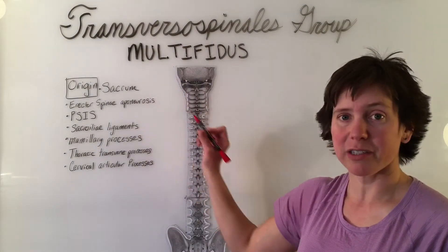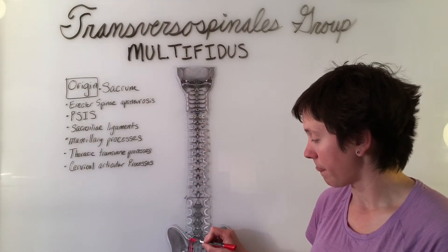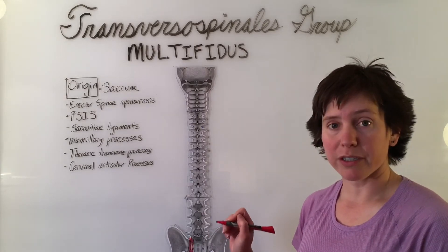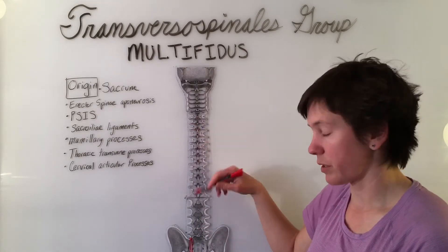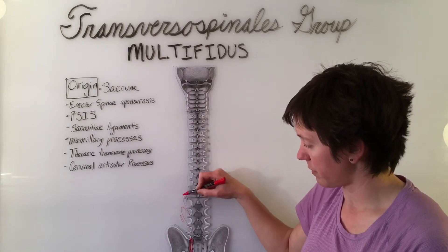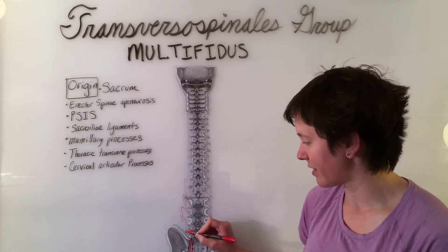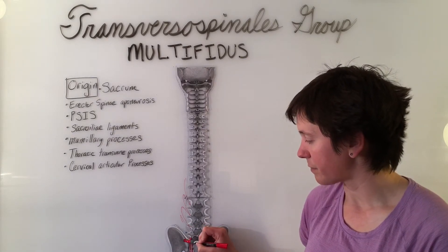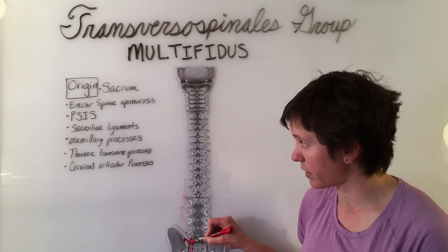First, it originates on the dorsal surface of the sacrum, the erector spinae aponeurosis — which is kind of everywhere, so we'll just have it like that — the PSIS, and the sacroiliac ligament.